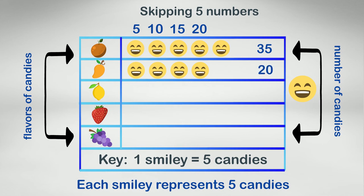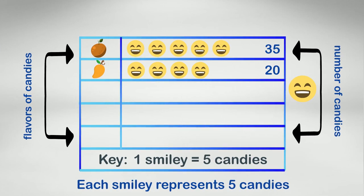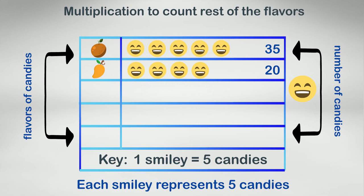This time let's use multiplication to count rest of the flavors. Lemon flavored candies: there are three smileys and each smiley is equal to five candies, so three into five is equal to 15. So the pack has 15 lemon candies.